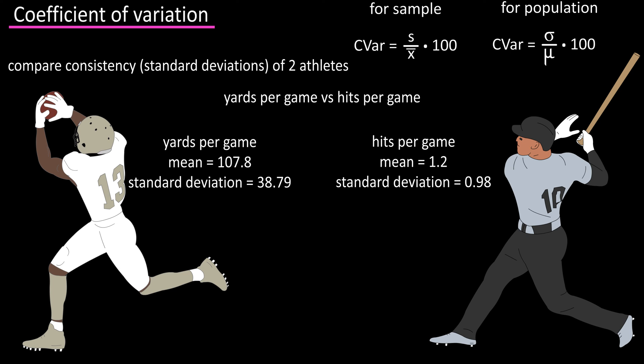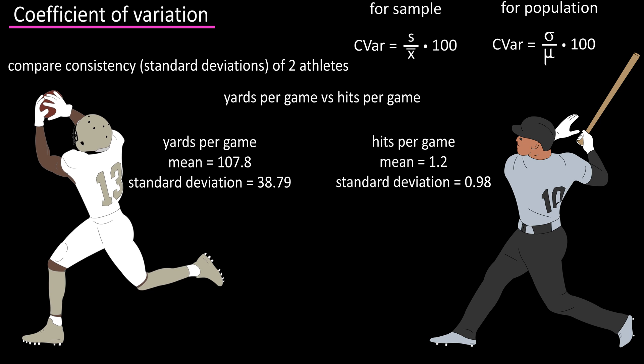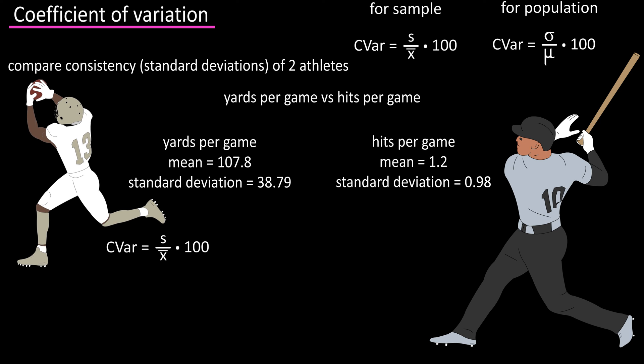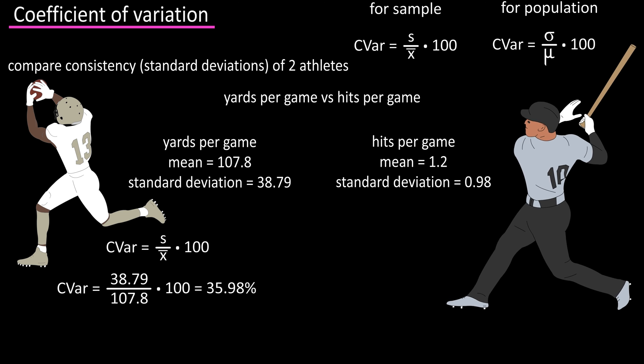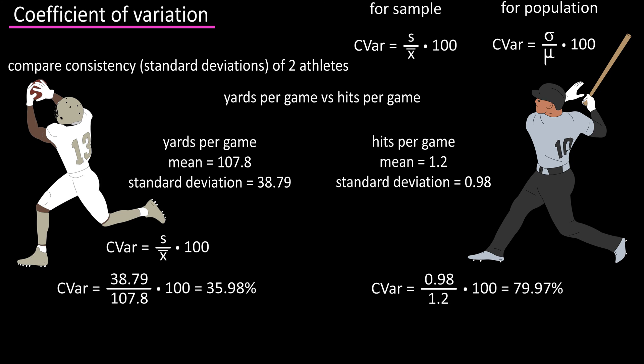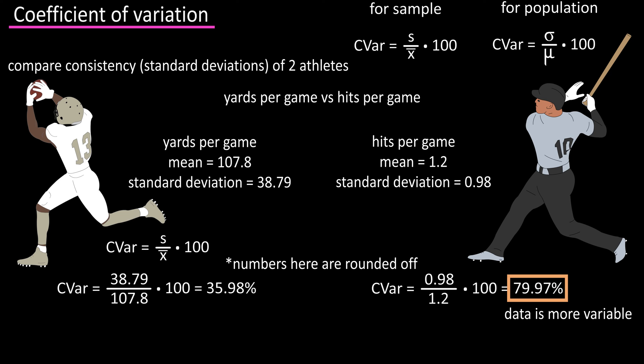So which player is more consistent based on these statistics? Using our formula, we plug in Thomas's numbers: 38.79 standard deviation over 107.8 mean times 100 gives us 35.98% for his coefficient of variation. For Mankata, a standard deviation of 0.98 divided by a mean of 1.2 times 100 gives us 79.97% for his coefficient of variation.